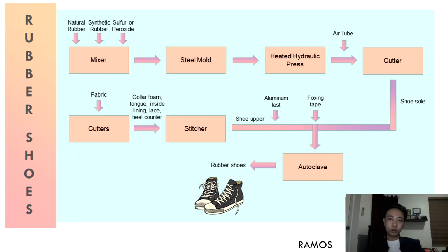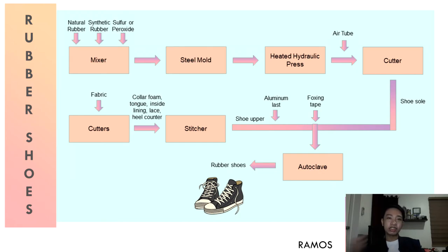Finally, the shoes are sent to an autoclave for vulcanization, which operates at temperatures ranging from 120 to 180 degrees Celsius and pressures of 140 to 350 kilopascals. However, these high temperatures create limitations on what materials can be used, as polymer-based fabrics such as polyester risk melting during the process. Despite this, there are heat-resistant polymer-based materials suitable for vulcanization. Note that the process for shoemaking may vary depending on the type of shoe, but the basic elements remain the same.